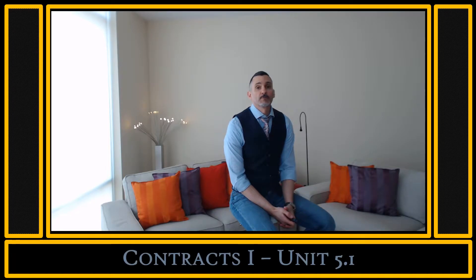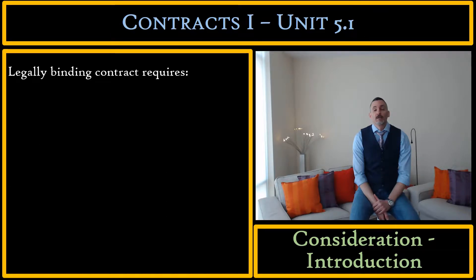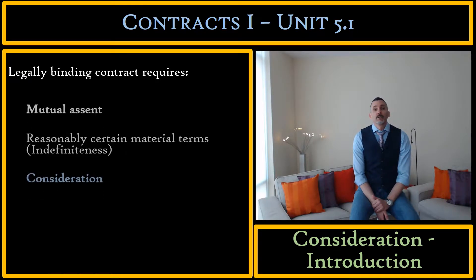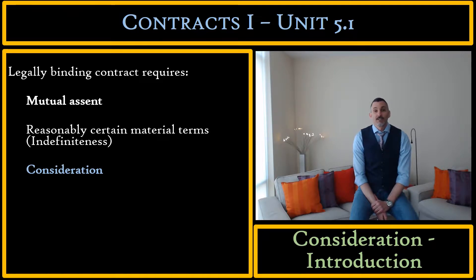In this unit, we will fully explore the common law doctrine of consideration. Let's talk about consideration, but before we do, let's refresh our memories about our roadmap. A legally enforceable contract requires three things: number one, mutual assent — we've already discussed that in depth; number two, the material terms must be reasonably certain — that's indefiniteness, also already discussed; and third, there must be consideration. This is the unit where we discuss consideration. Law professors love consideration — I'm really looking forward to this.